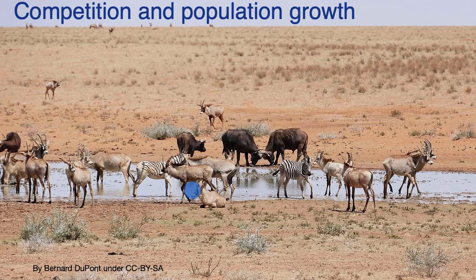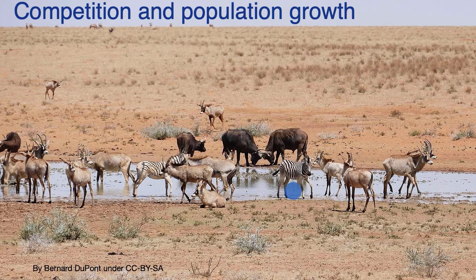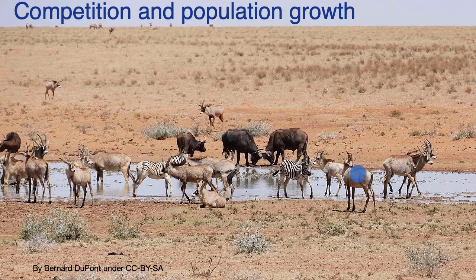We have a picture of animals at a watering hole. Why don't we see more animals? There's clearly enough space for more. If we focus on any one population, say zebra, every zebra can have far more than one offspring in their lifetime, and those offspring can have offspring and so on. So it seems like over time, zebras should just keep multiplying until they fill all of this land — similar for the buffalo, similar for the antelope. Why don't we see that?